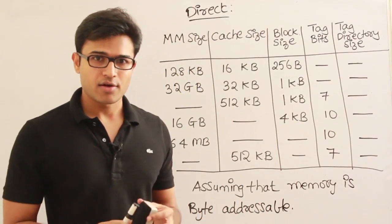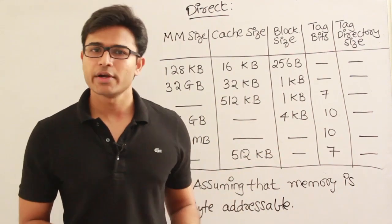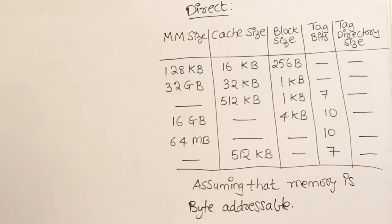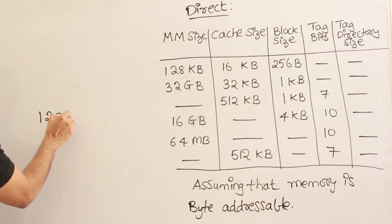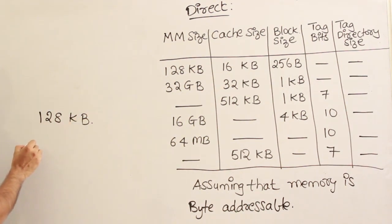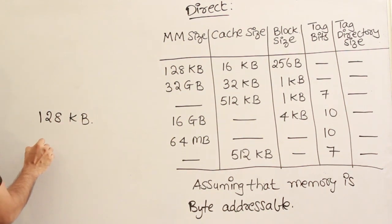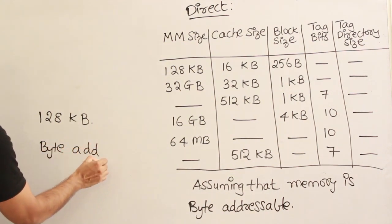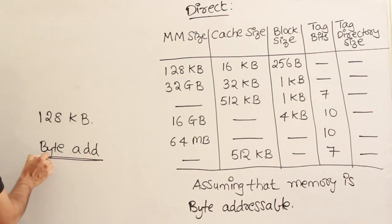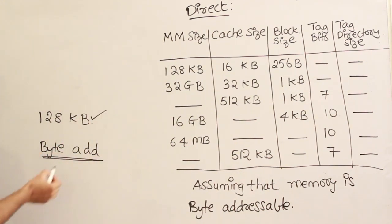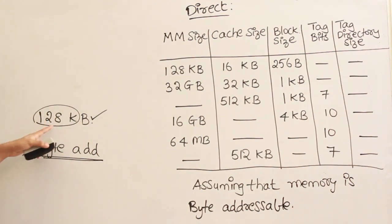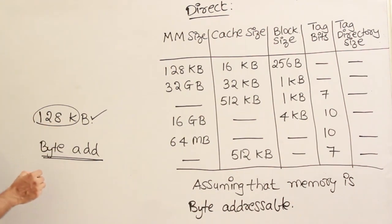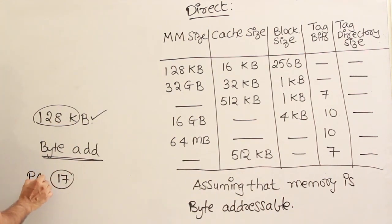Let's take a small example. Assume main memory size is 128 KB and it is byte addressable. Byte addressable means every address you produce should be able to address all the bytes present. There are 128K bytes, so how many bits are required to address all bytes uniquely? It is 17 bits. Therefore the physical address will be 17 bits.